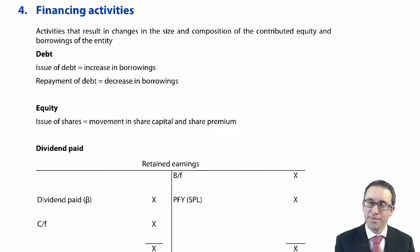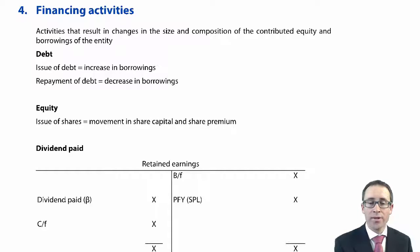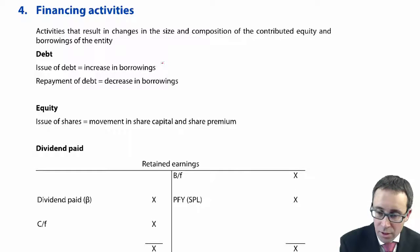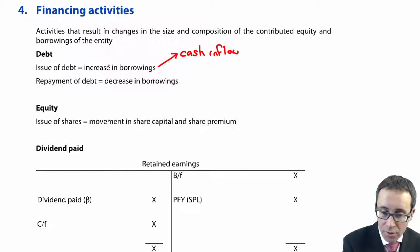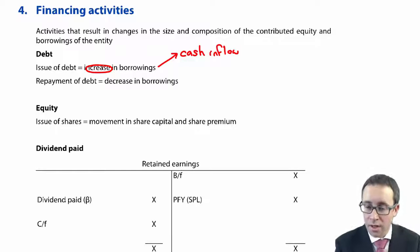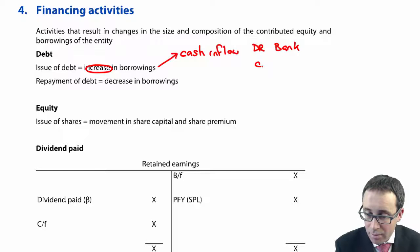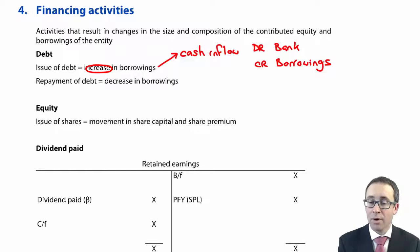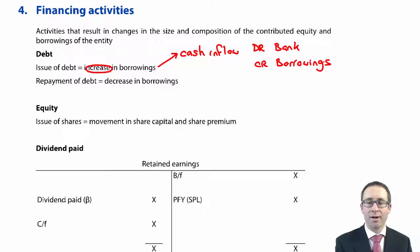Have a check to see if there's anything current. If you increase your borrowings, you have an issue of debt. Is it a cash inflow if there is an increase in the borrowings? Because effectively, what you've done there is you have debited the bank and credited your borrowing. So a credit increases the borrowing, and the debit to the bank increases your cash balance.